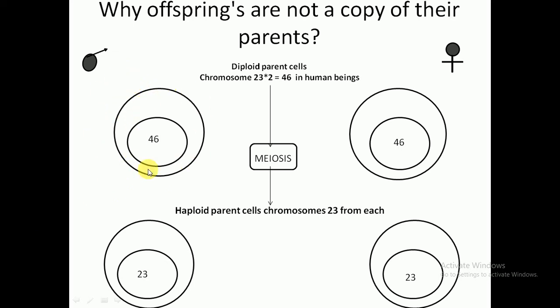A male parent has a diploid cell with 46 chromosomes arranged in 23 pairs. In females, there are also 46 chromosomes in 23 pairs. Chromosomes 1 to 22 are known as autosomes, which are similar in both parents. The 23rd chromosome is the sex chromosome — in males it is XY and in females it is XX — and these are known as allosomes.